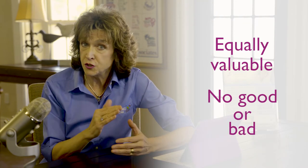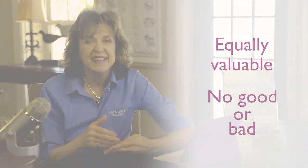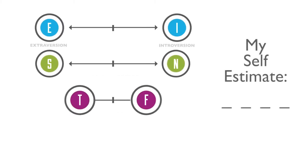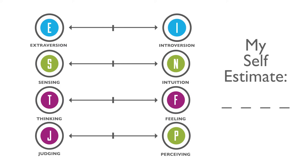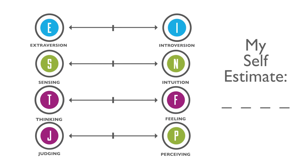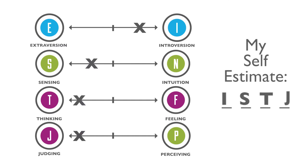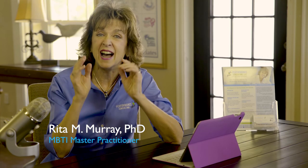Each of the opposites is equally valuable. There is no good or bad, just as there were no right or wrong answers when you took the MBTI. The eight preferences are represented by one of these eight capital letters: E, I, S, N — you'll see that I has already been used for introvert, so a capital N is used to represent intuition — then T, F, J, and P. Do your best to determine which preference in each pair contains more descriptions that feel like you when you're most you, natural and comfortable. Your goal is to identify your four-letter MBTI self-estimate.